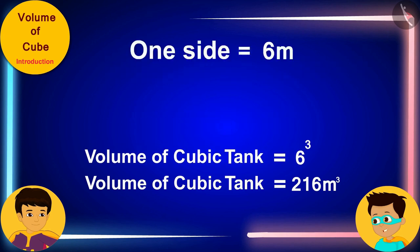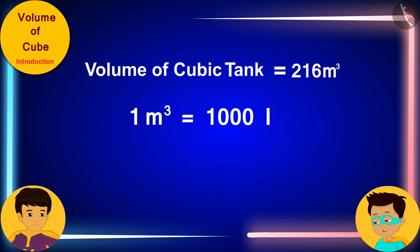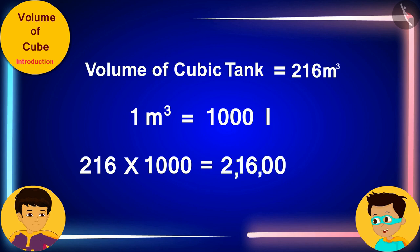And you already know that one cubic meter is equal to 1000 liters. This means 216 times 1000, that is 216,000 liters of water can be filled in this tank. Come on Thomas! Let us quickly return to our world. We have to go to play cricket too.